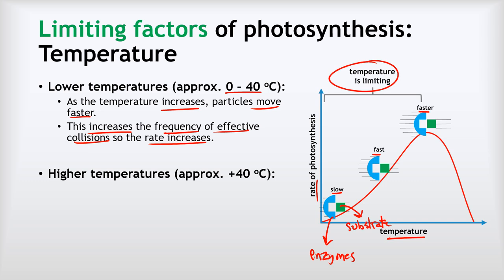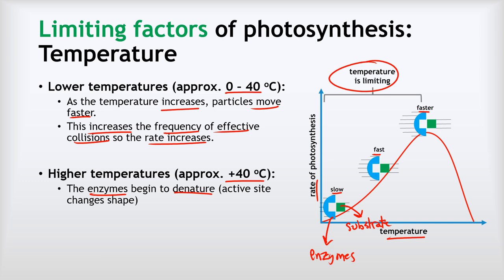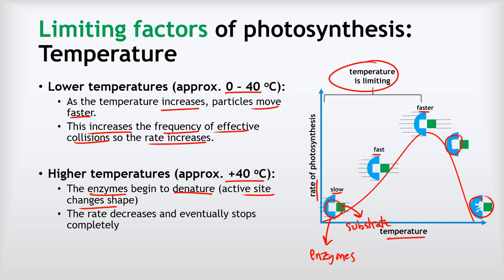At high temperatures — roughly above 40 degrees Celsius, though it varies by plant — the enzymes begin to denature. The active site, which has the complementary shape for the substrate, starts to change shape. We can see the active site developing wiggly edges and eventually becoming completely ruined. The substrate no longer fits, so the rate decreases and eventually stops completely when the enzyme is fully denatured. That's why the graph plummets at very high temperatures — enzyme denaturation.